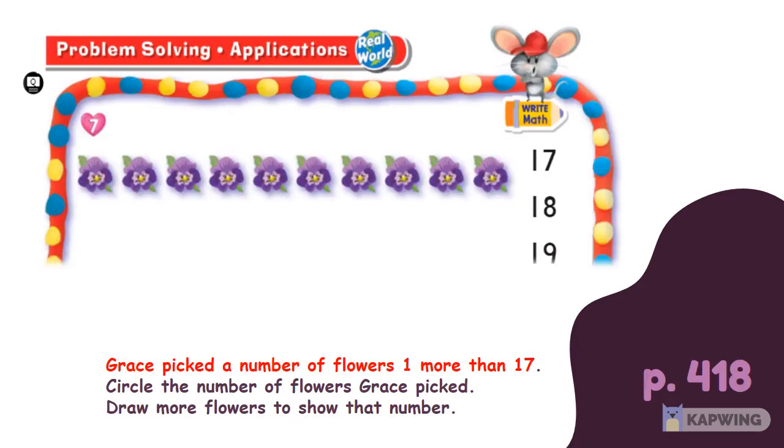On page 418, Grace picked a number of flowers 1 more than 17. What number do you think is that? Hmm, 1 more than 17 is 18. Grace picked 18 flowers. How many more do we need to show that number? Correct! We have to draw 8 more flowers to complete 18 flowers.